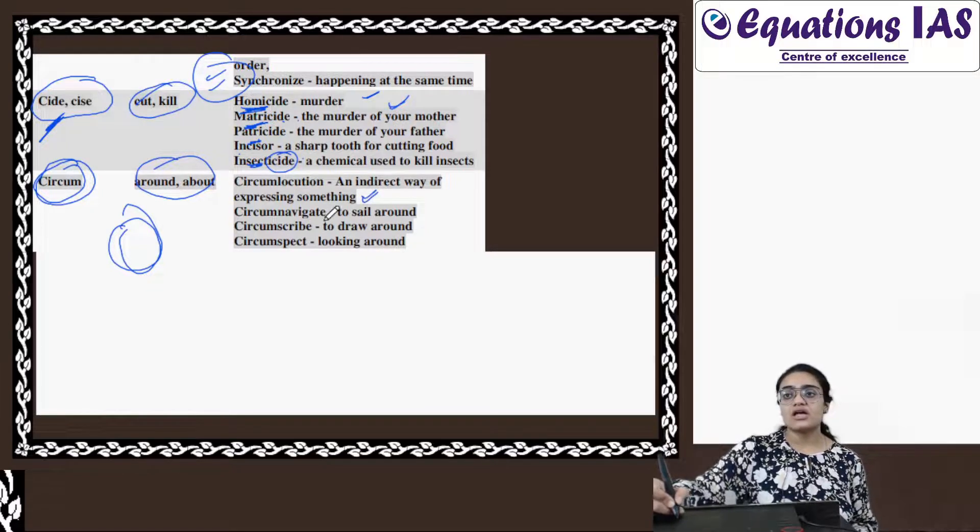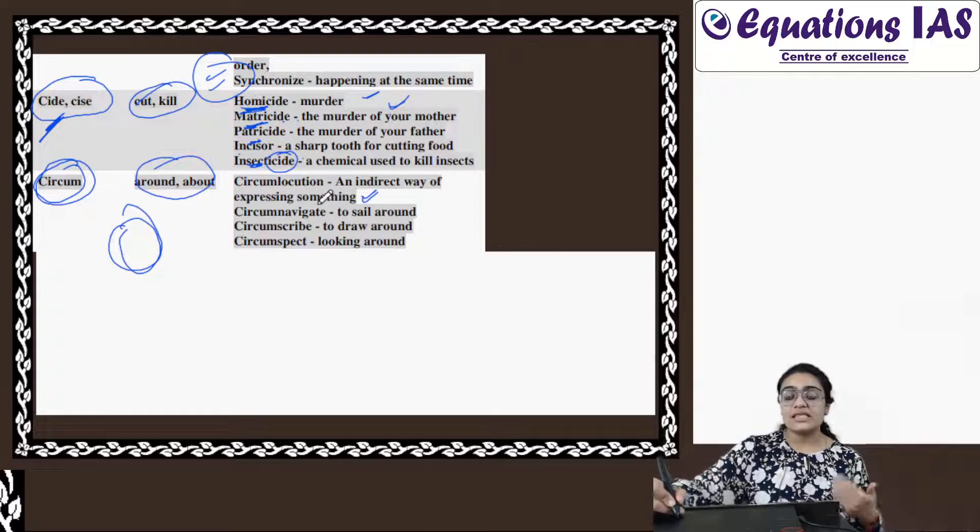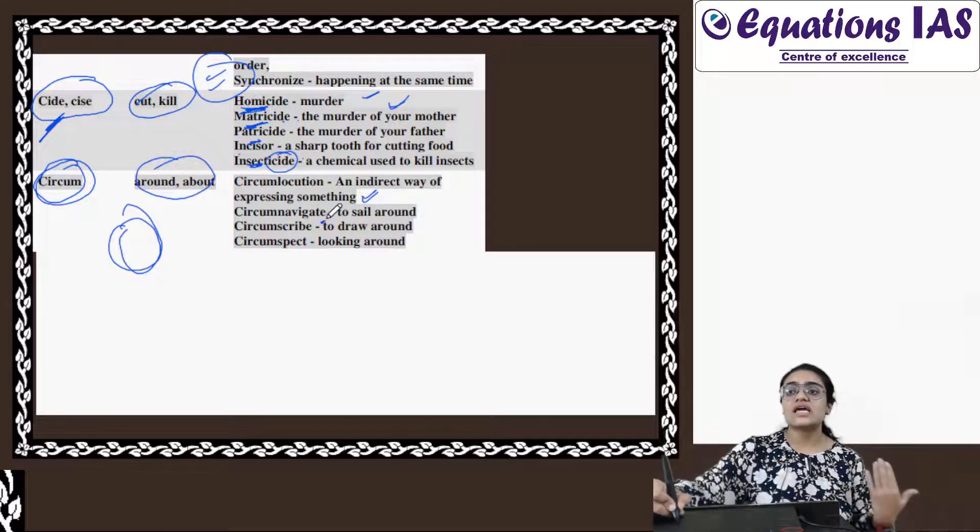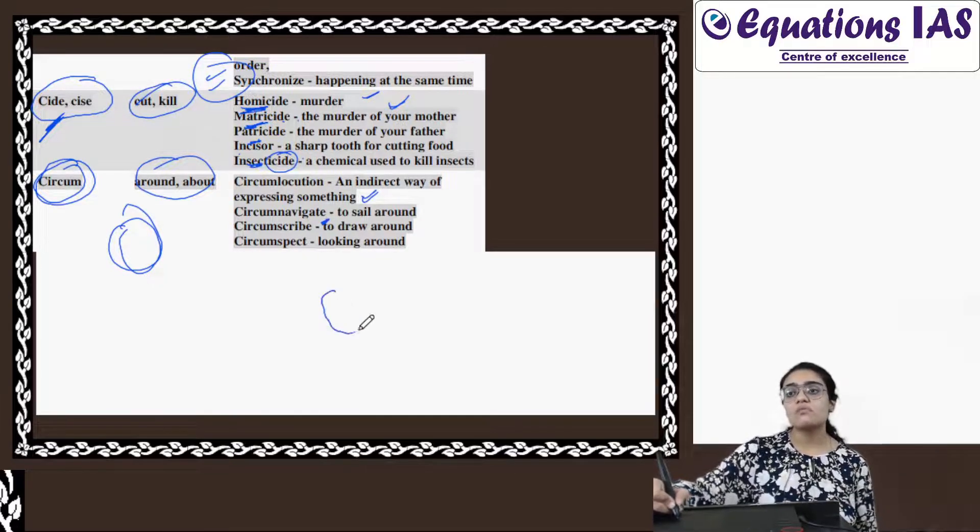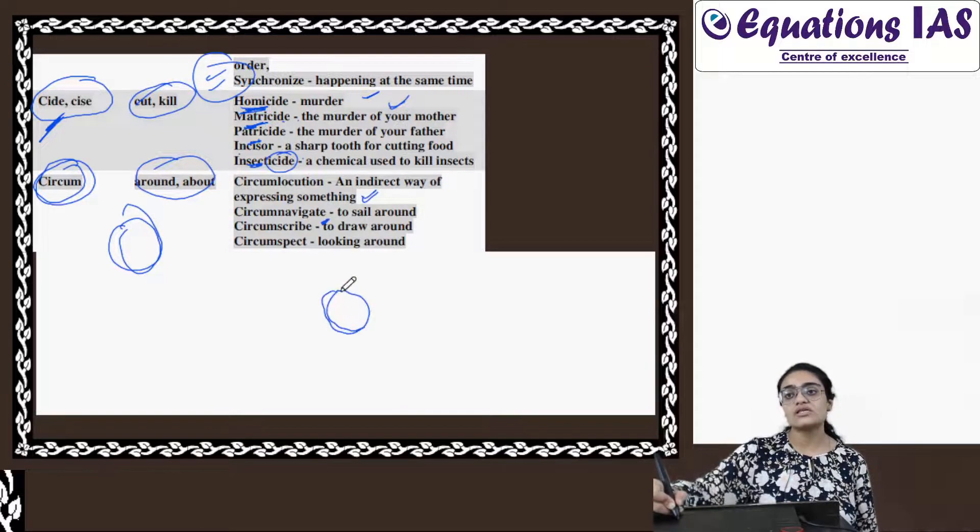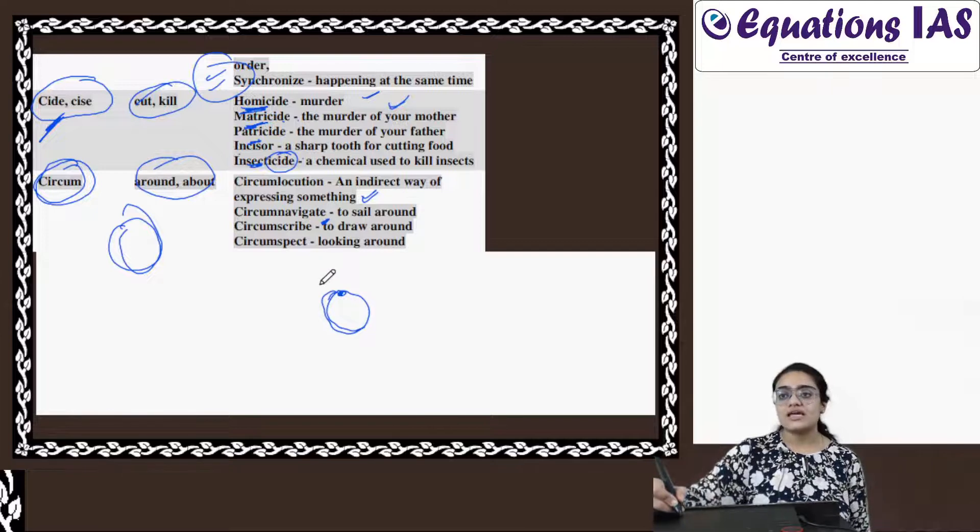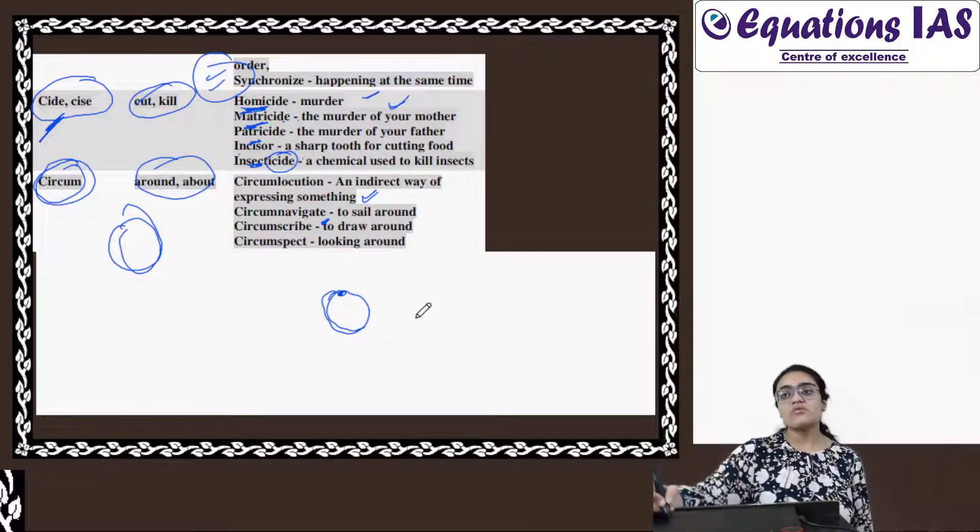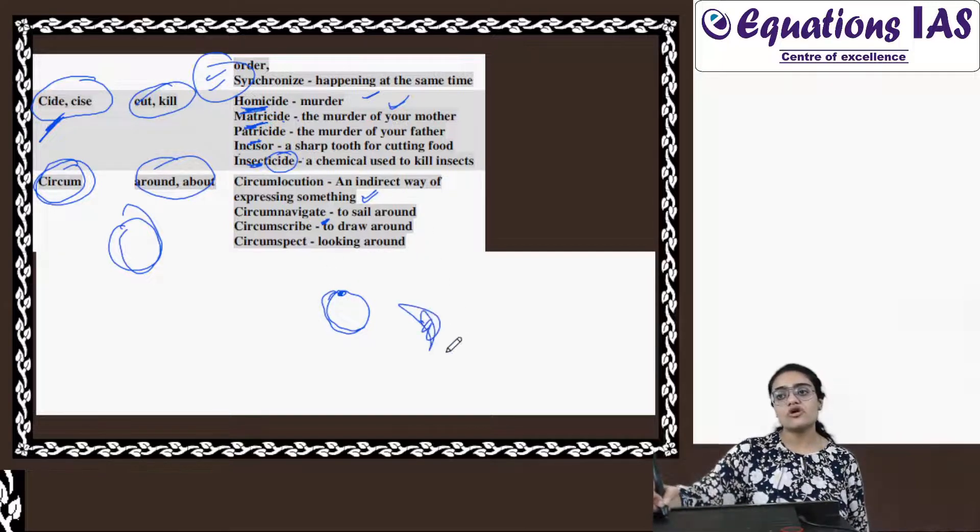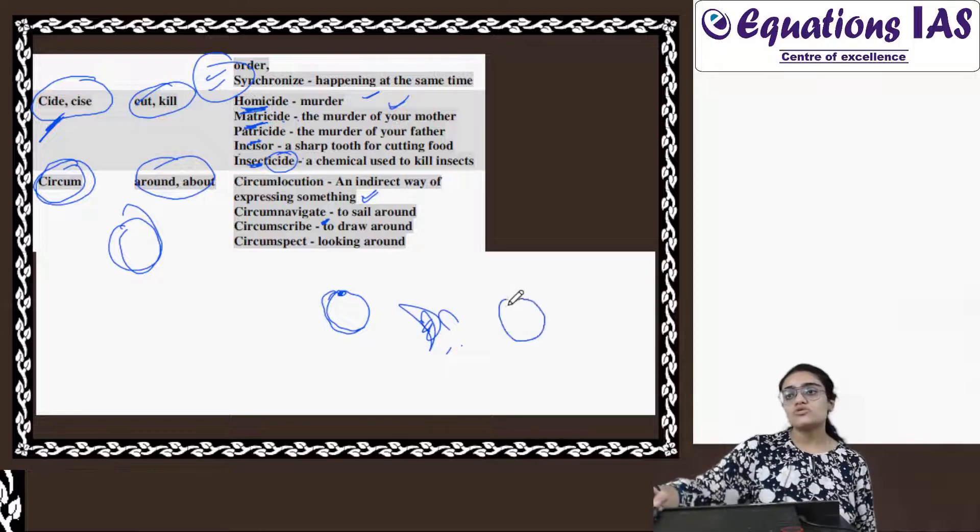Circumnavigate. Navigate ka matlab kya hota hai? Navy - it is related to navy, it is related to sailing the ship. So circum - to sail around. You are sailing around, you are coming back from where you started. Circumscribe. Scribe, scribbling ka matlab kya hota hai? Draw karna. So circum - to draw around.